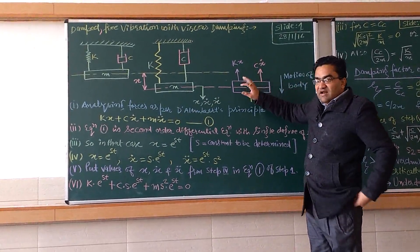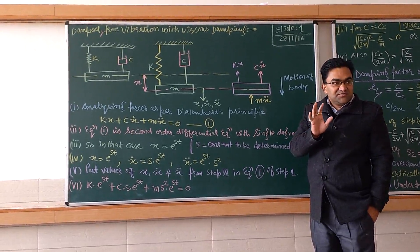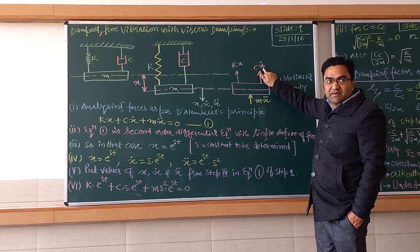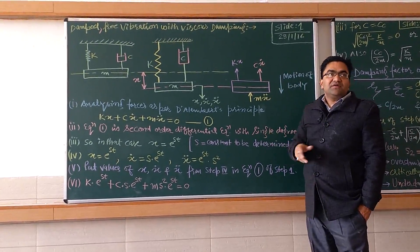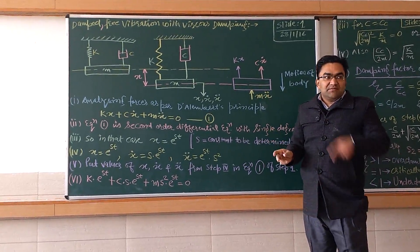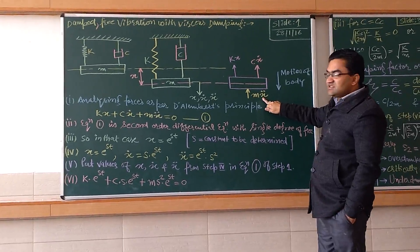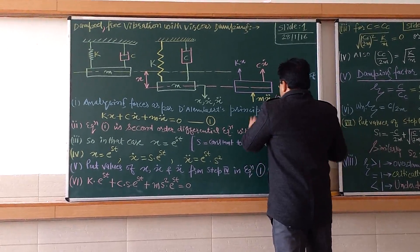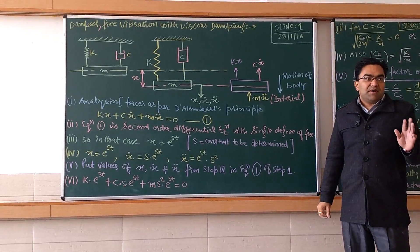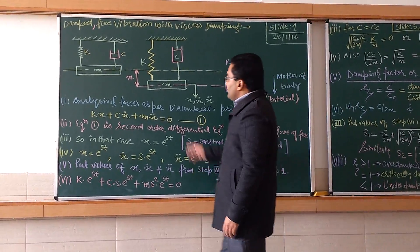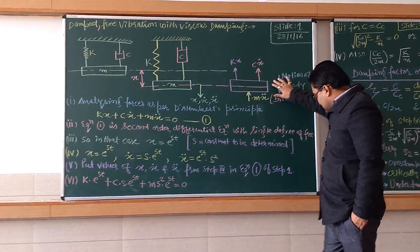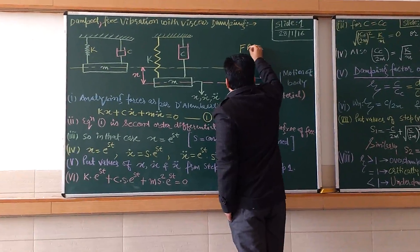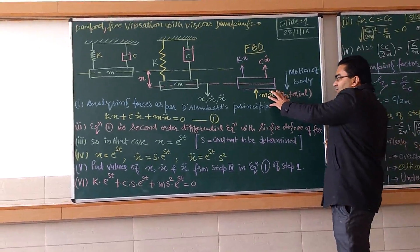Due to the motion of this mass in the downward direction, what forces will be developed in the system? From the free body diagram we can analyze. The first is Kx — the resistive force offered by the spring or stiffness member. Second is Cx-dot — the damping coefficient multiplied by velocity — this is the damping force offered by the damper, opposing the motion. Third is Mx-double-dot — the inertial force introduced by applying D'Alembert's principle. This is the FBD of the system.